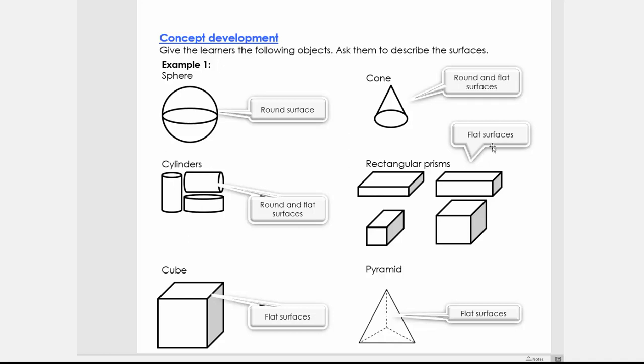Then we're going to look at rectangular prisms and you can use a variety of boxes that you have at home, small boxes, lunch boxes, and we're going to see that they have flat surfaces.